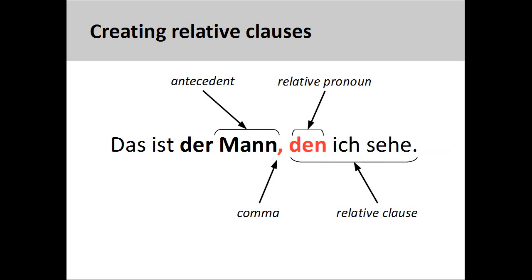What we have now is a tighter, more flowing sentence: "das ist der Mann, den ich sehe" — that is the man whom I see. It is important to note that a comma is used to set off the relative clause from the main sentence. The relative pronoun "den" now introduces the relative clause. The redundant element has been removed, but the antecedent "Mann" is still in place. There are a few rules governing how relative pronouns are used, so let's take a look at them now.